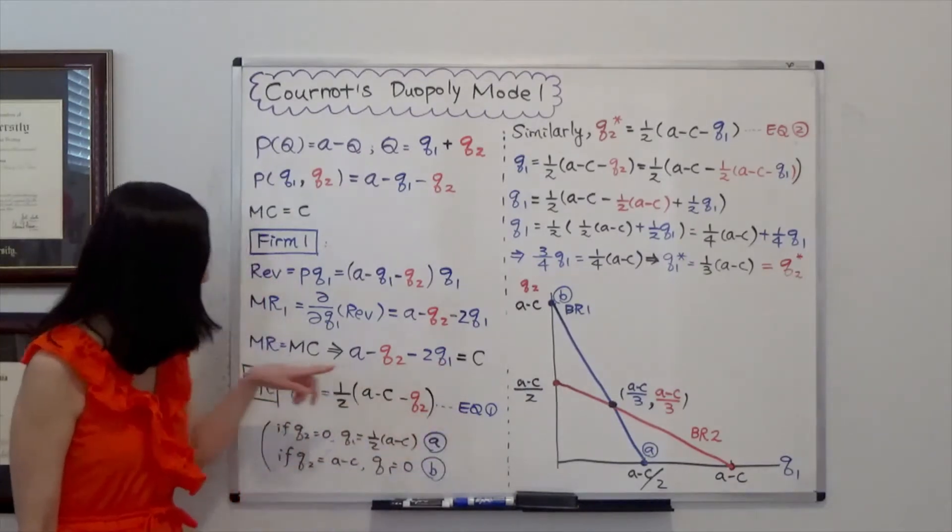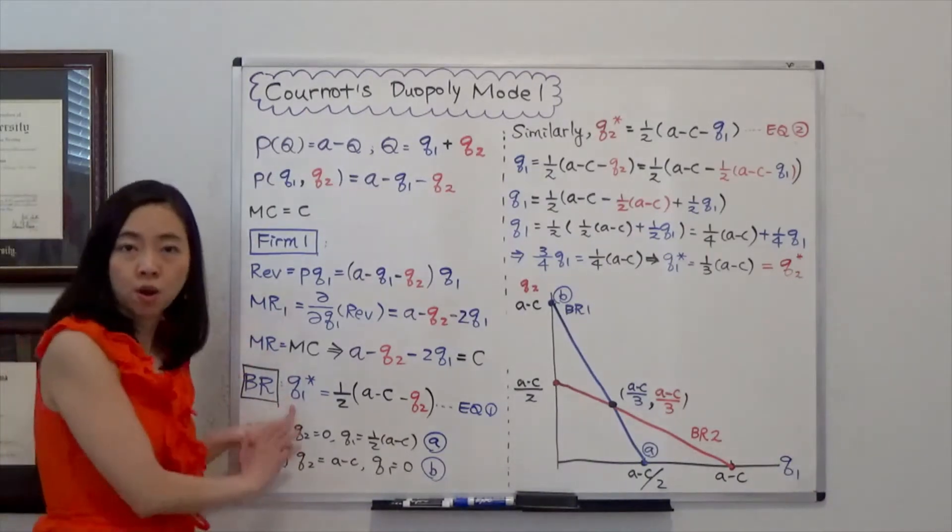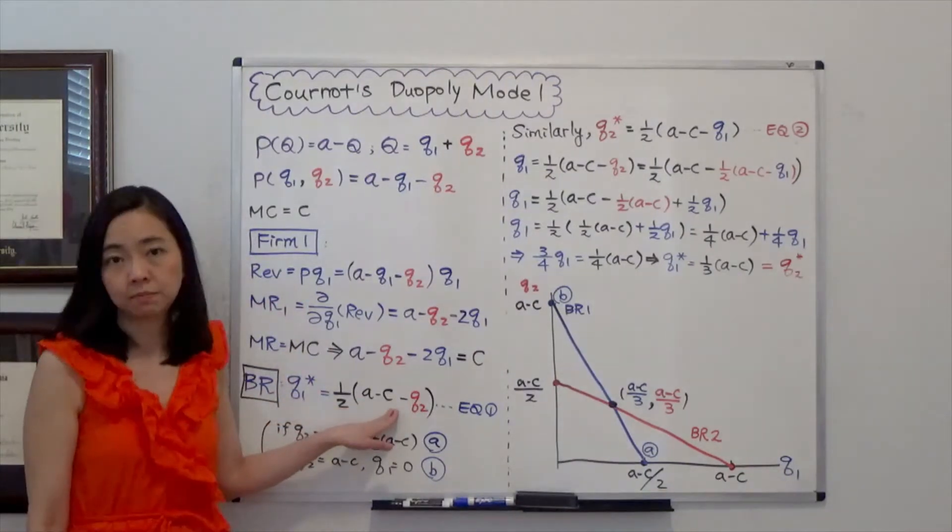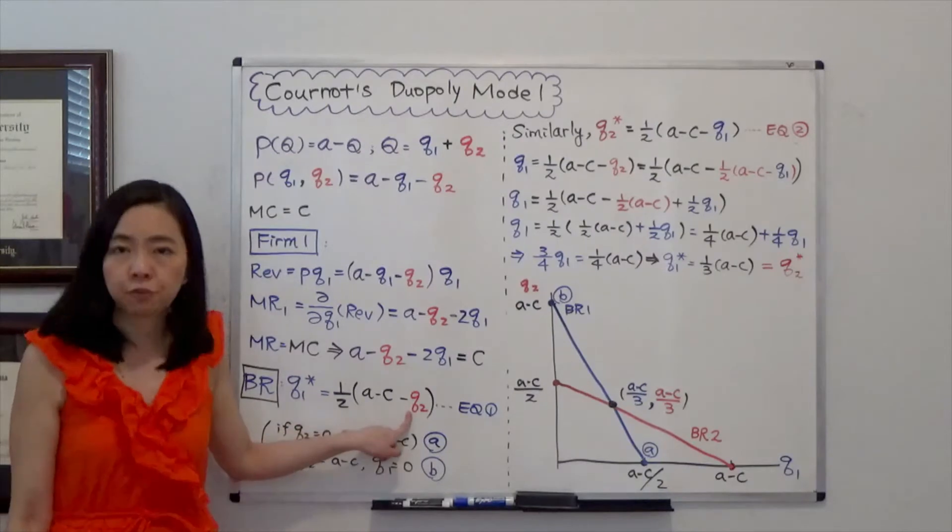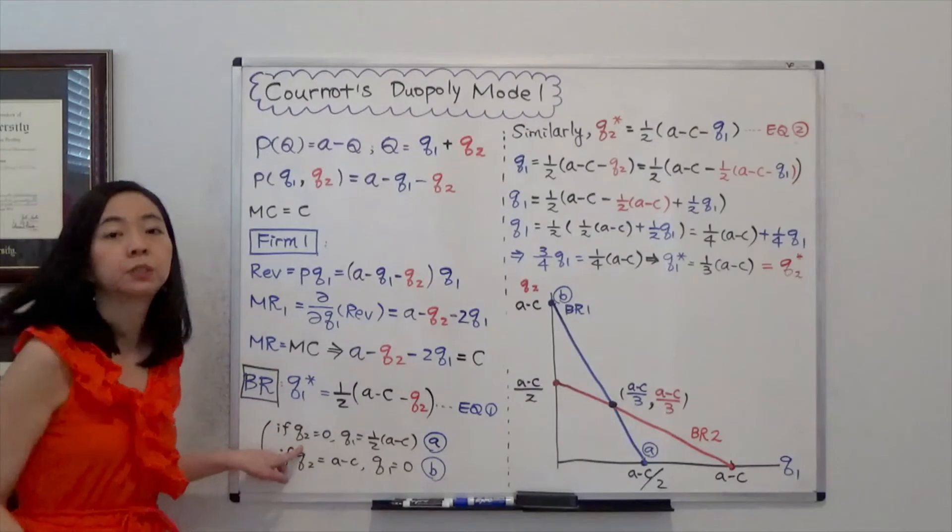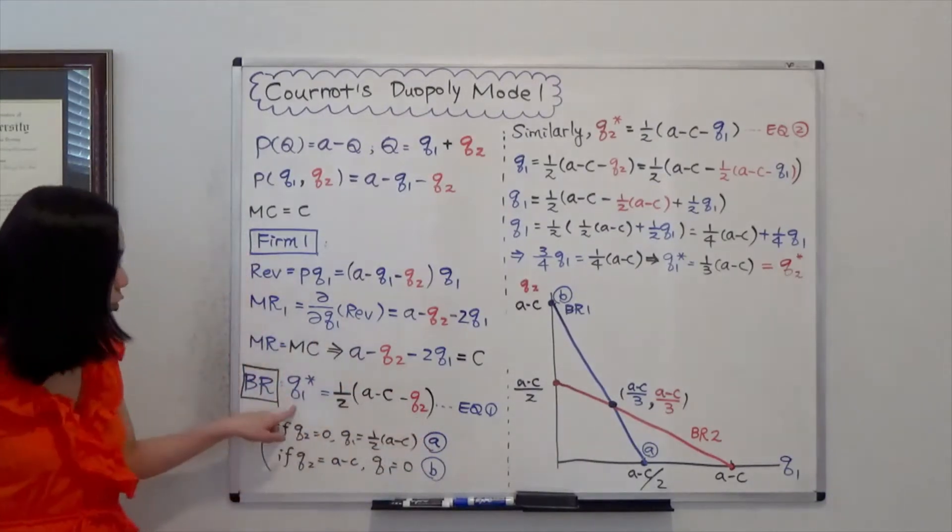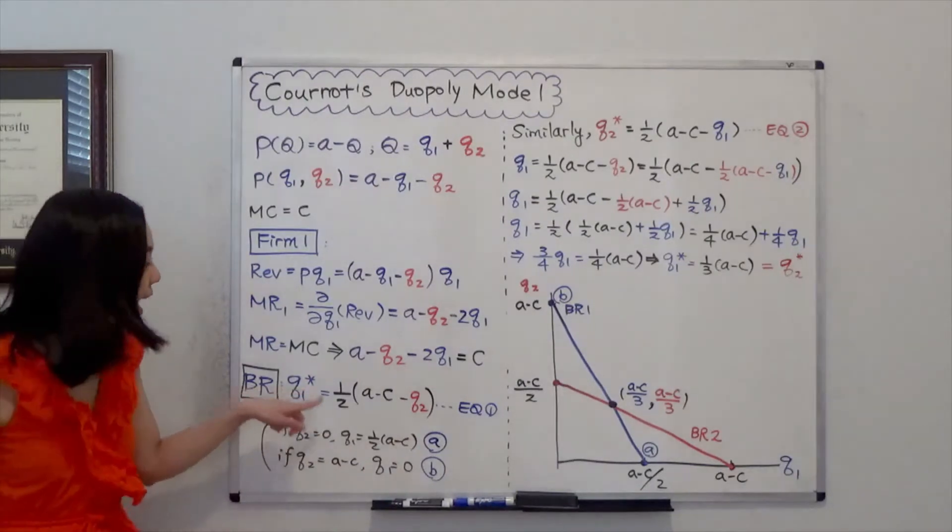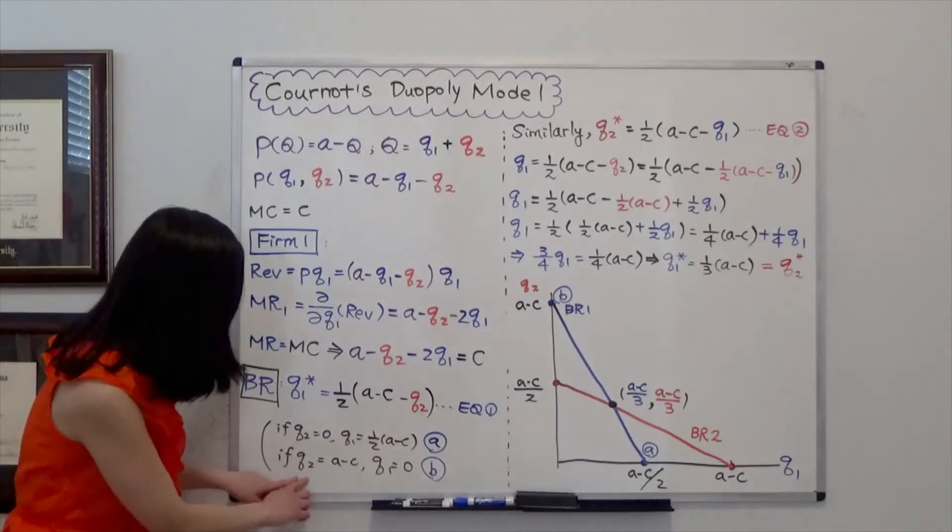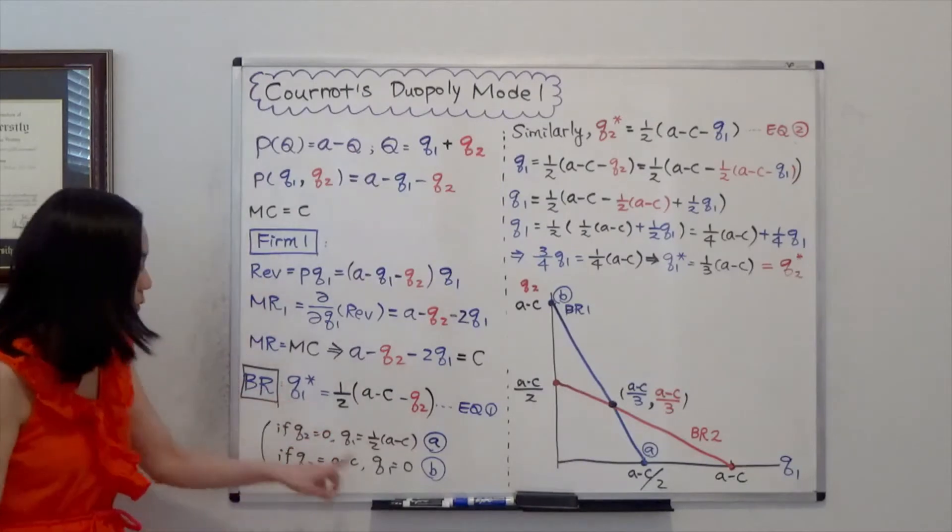Now notice that we call that best response function because Q1 or the quantity that firm 1 is going to produce depends on not only A and C but also the quantity that firm 2 is going to produce. So for example if firm 2 is producing nothing, if Q2 is equal to 0, then Q1 will be equal to a half times A minus C. And if Q2 is equal to A minus C then Q1 will be equal to 0.